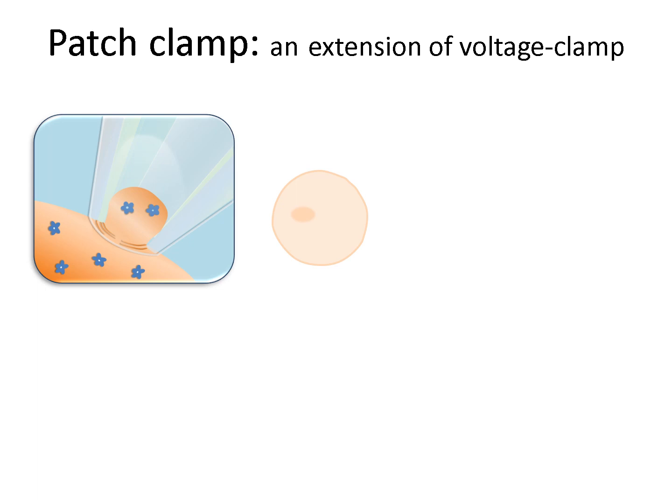Instead of impaling the cell with a sharp microelectrode, a pulled-out glass micropipette with a smooth tip was pressed up against the cell membrane. The membrane interacted with the glass to form a very tight seal, which isolated a patch of membrane on the cell. Their subsequent experiments found that by applying some suction down the pipette, an even tighter seal could be formed. The seal was electrically tight, as indicated by an electrical resistance on the order of giga-ohms, or 10 to the 9 ohms. That led to the term giga-seal to describe the tight seal formed between the membrane and pipette. It was also found that if there were any ion channels present in the electrically isolated patch of membrane, currents flowing through them could be recorded, leading to the first single-channel recordings.